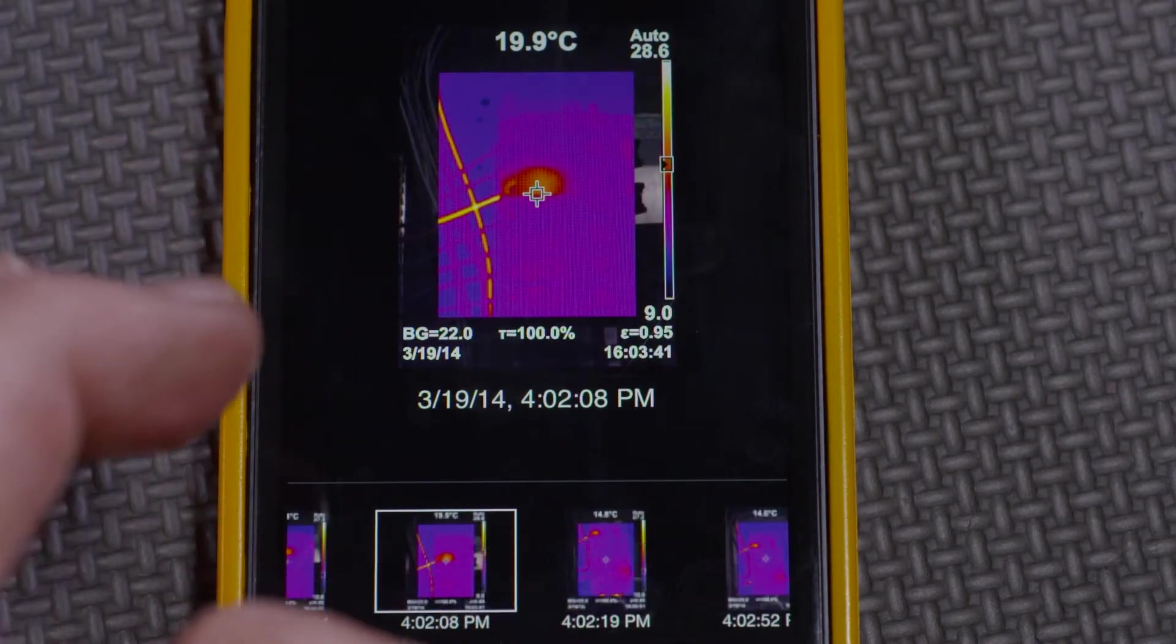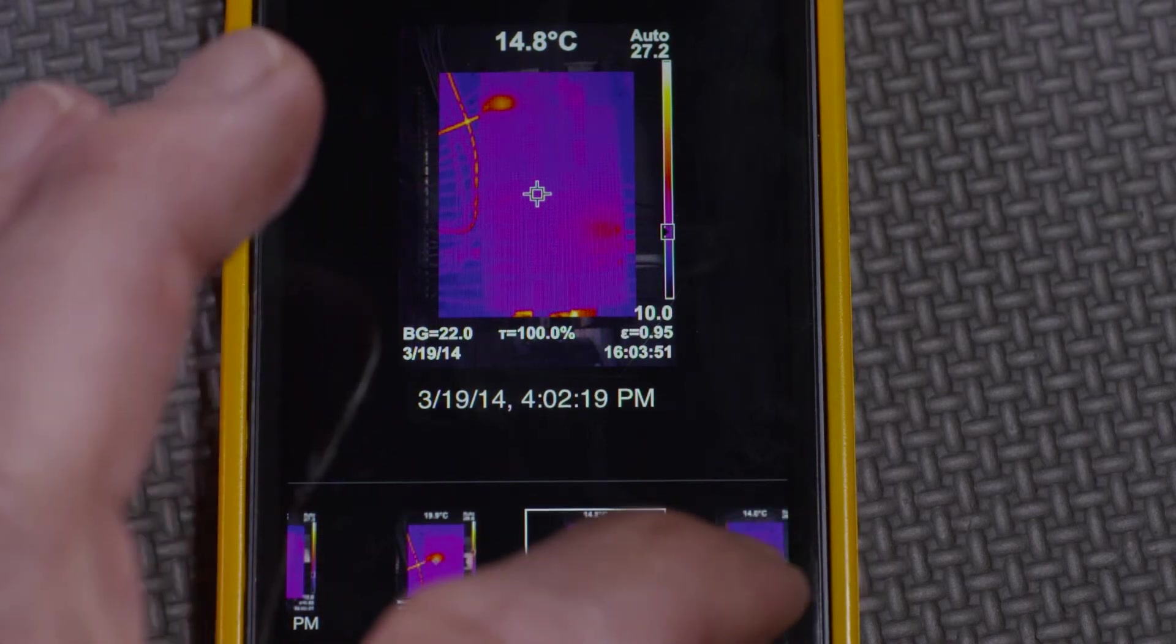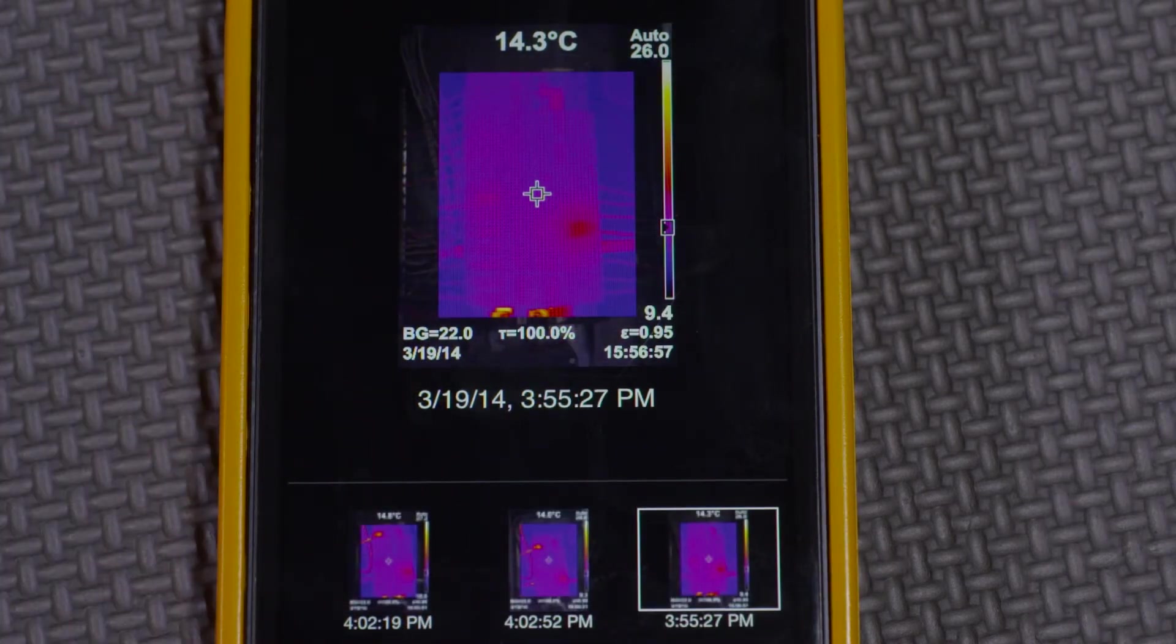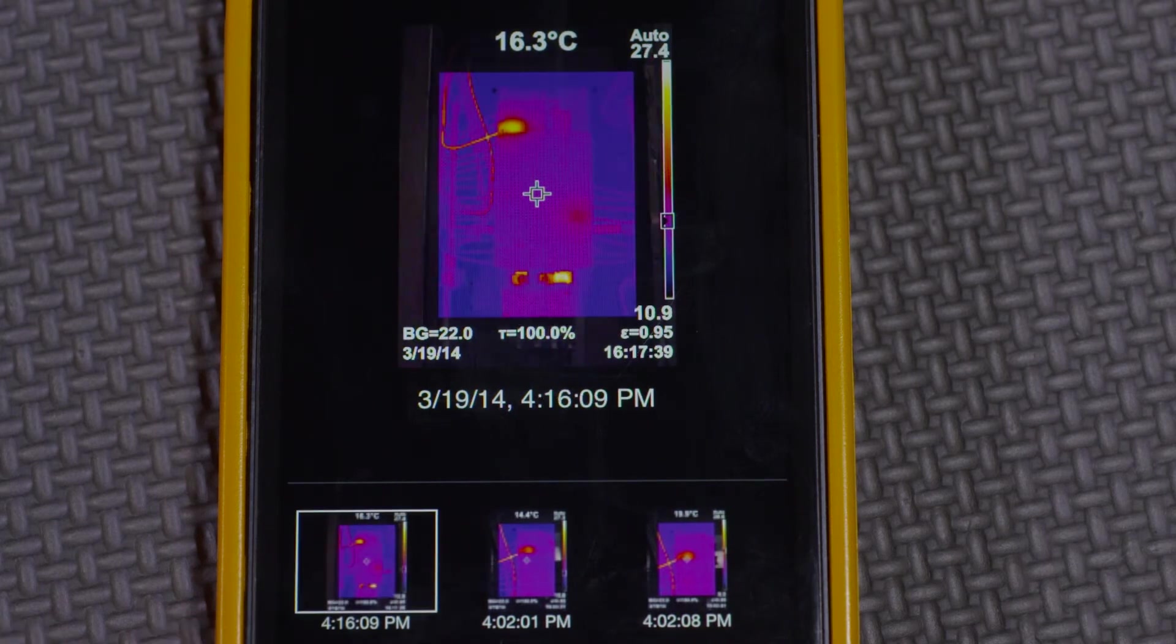By comparing the latest images to the ones taken before, maybe even a month ago, the preventive or predictive maintenance tech can determine that the circuit is getting hotter and possibly closer to overloading, shutting down mission-critical equipment or failure.